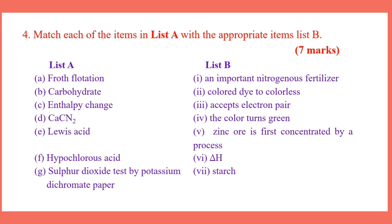Number 4: Match each of the items in List A with the appropriate items in List B. Number A: Arrhenius definition.